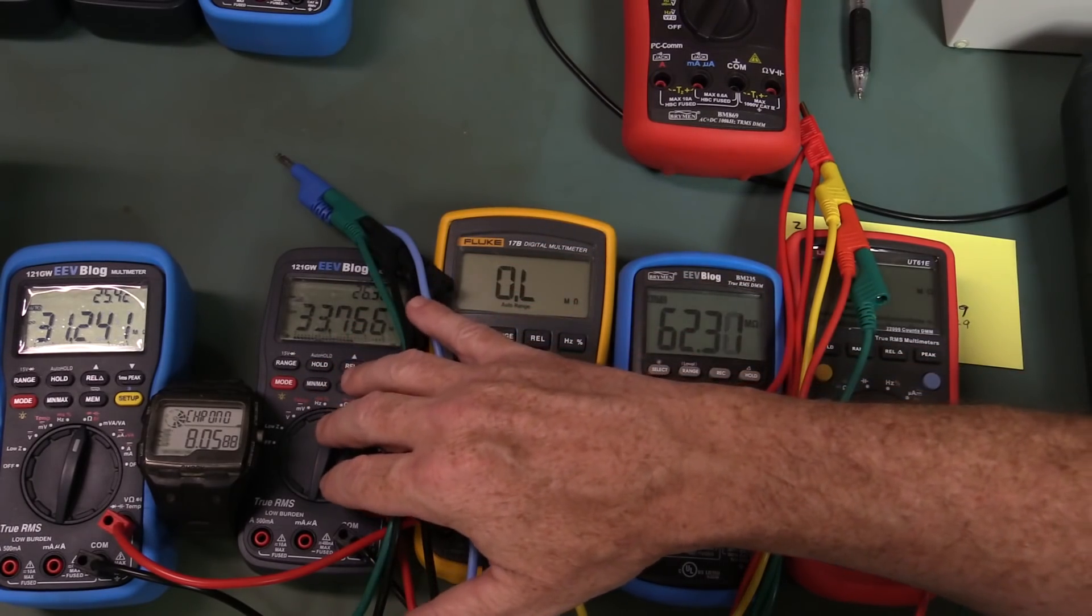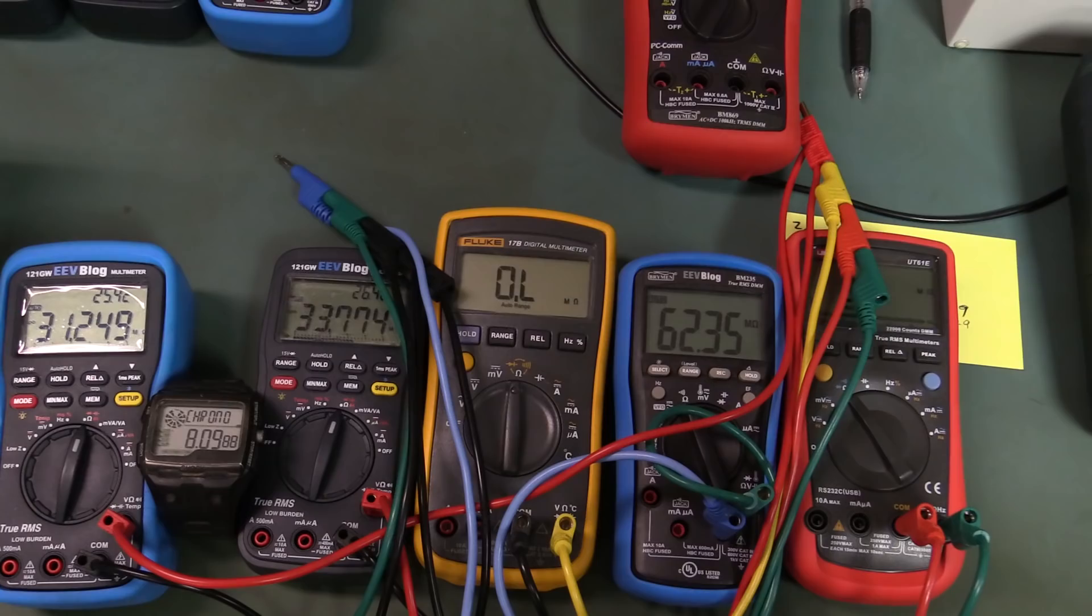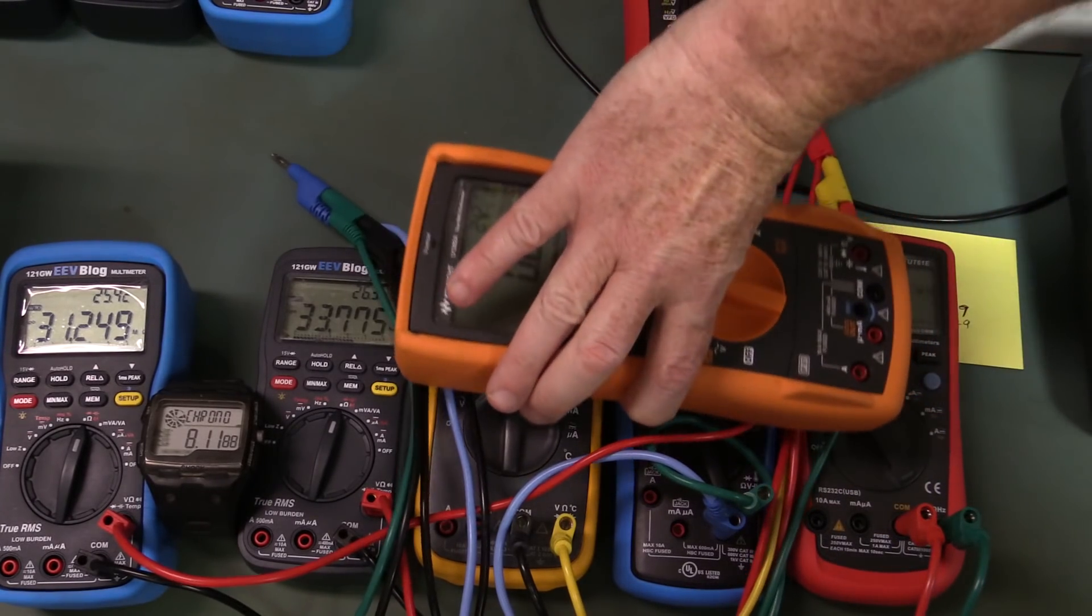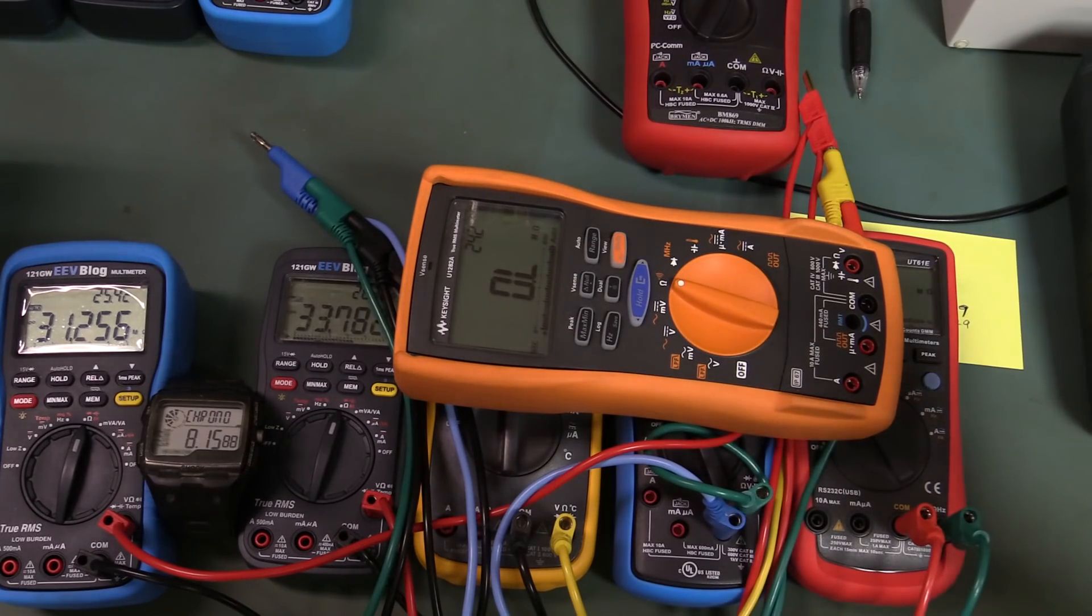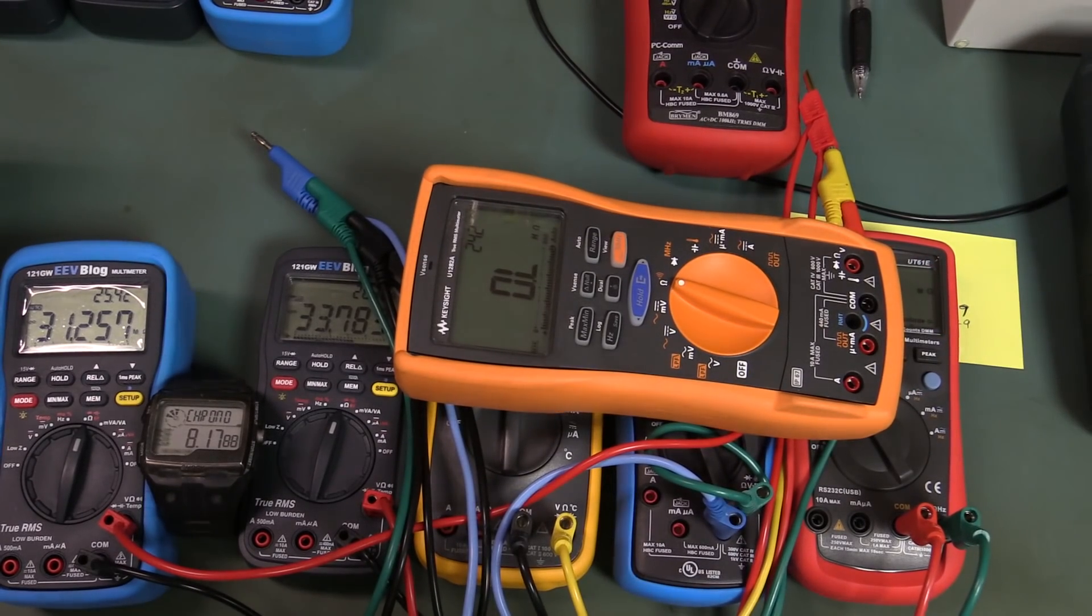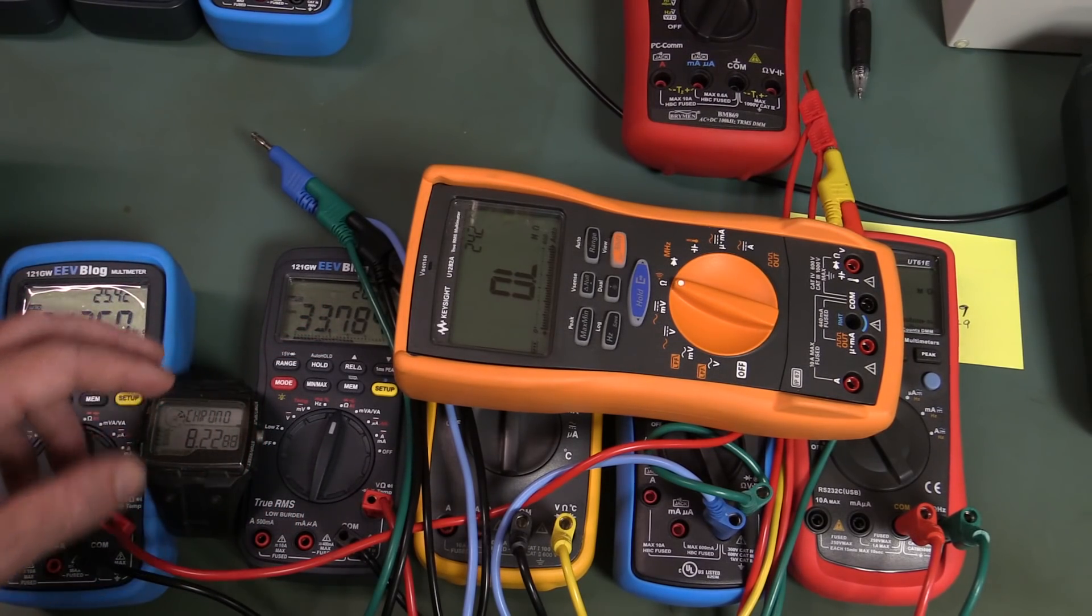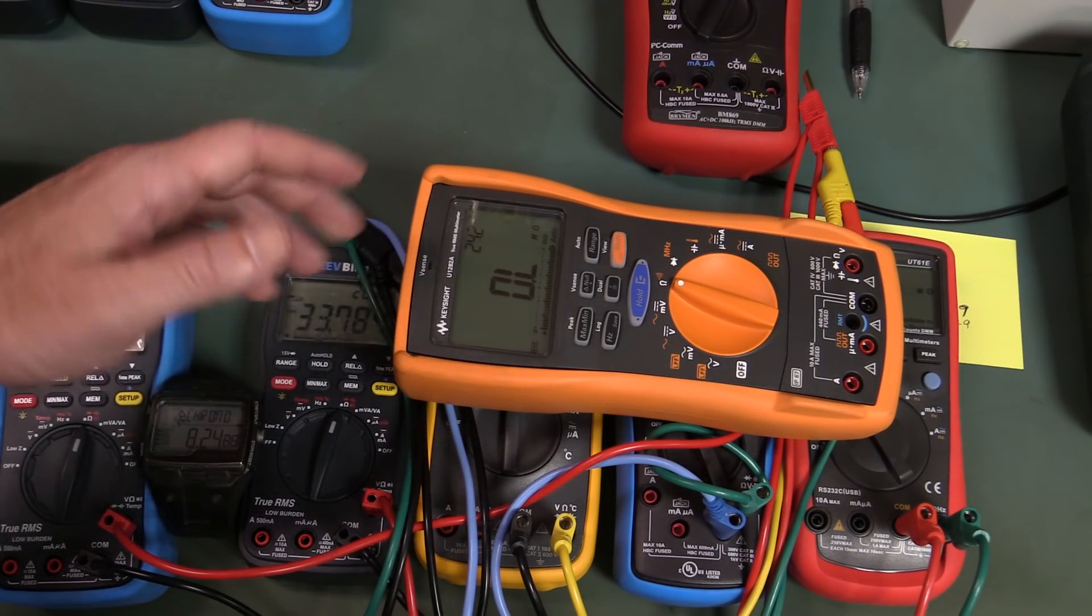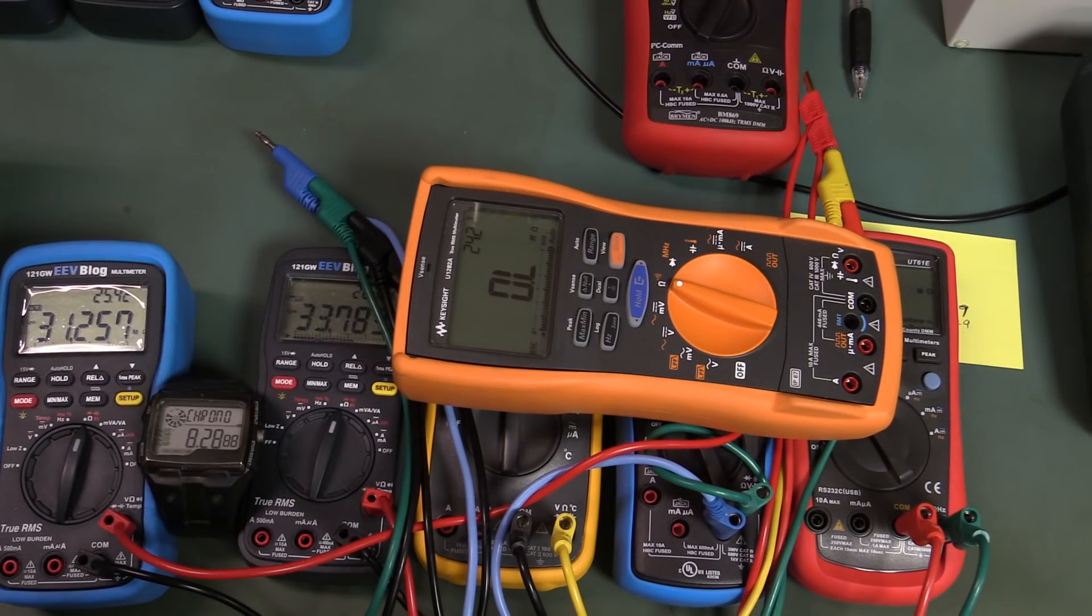And by the way, yes, some chipsets that use the same chipset as this and this, which is the HY3131 chipset, I think somebody on the forum reported that one of them got down to two seconds or something like that. So it is faster than what's implemented inside the Keysight and what's implemented currently inside the 121GW.